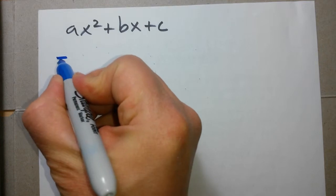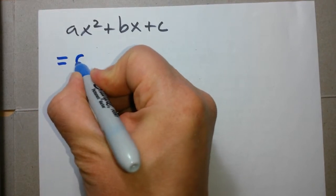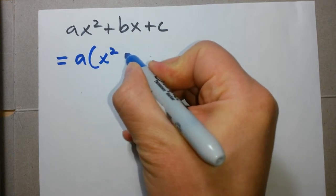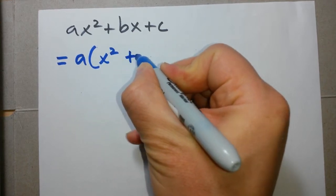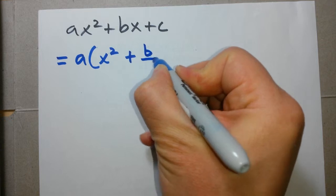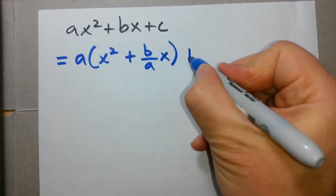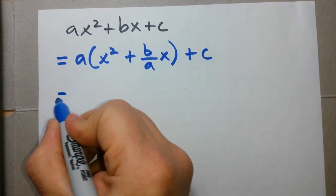We factor out a from the first two terms. So a open bracket, we end up with x squared plus b over a, because we're factoring out a out of b, x close bracket, bring down the c.